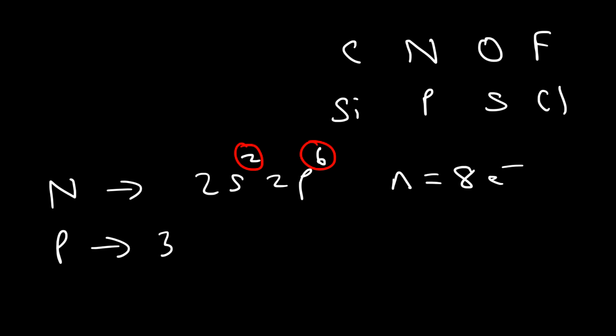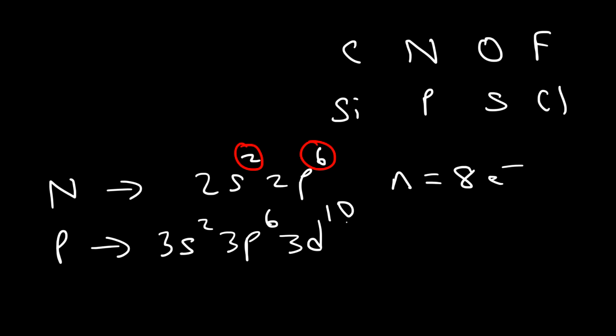Phosphorus is in the third row, so in the third energy level you have the 3s, 3p, and 3d sub-levels, meaning the third energy level can hold up to 18 electrons. That's why elements like phosphorus, sulfur, and chlorine can have expanded octets when they are the center atom — sometimes having 10 or even 12 electrons around them.